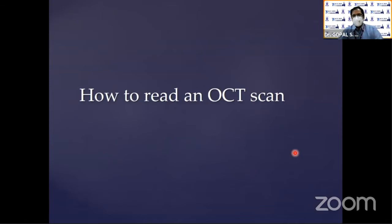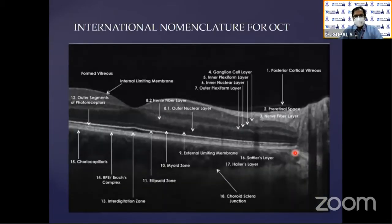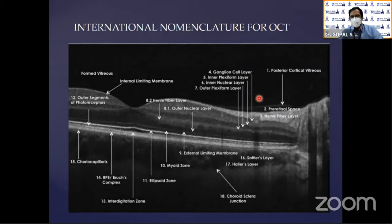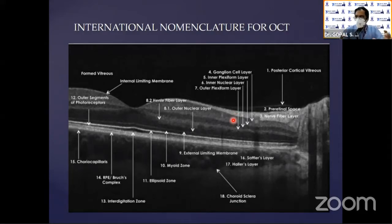Now let's go to how to read an OCT scan. From the posterior cortical vitreous to the pre-retinal space to the retinal nerve fiber layer — you can see all the layers: ganglion cell layer, inner plexiform, inner nuclear, outer nuclear, outer plexiform. As a postgraduate, we need to look at this image for a long period of time and identify each of these layers before going in for interpretation.